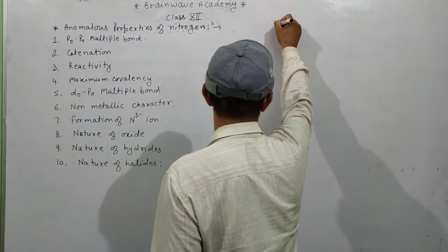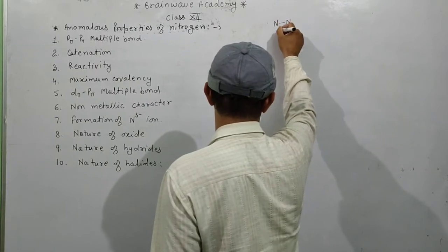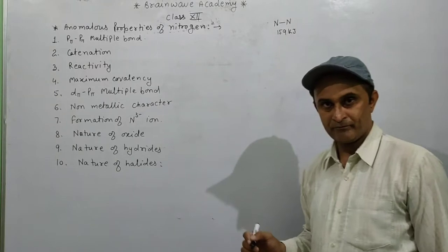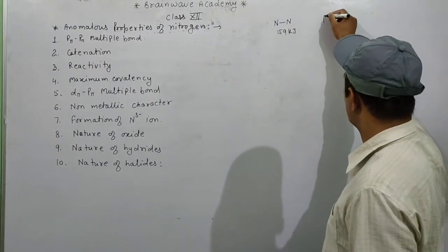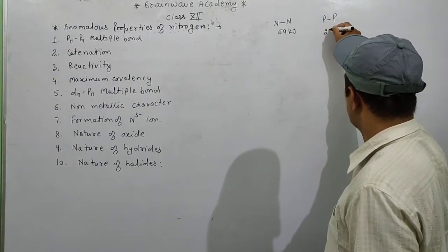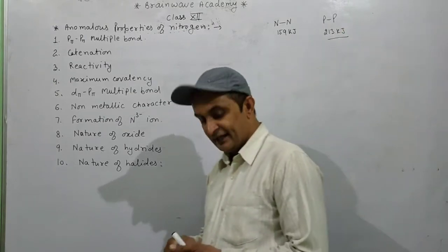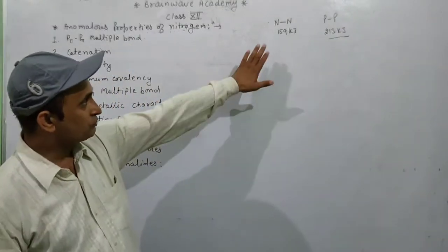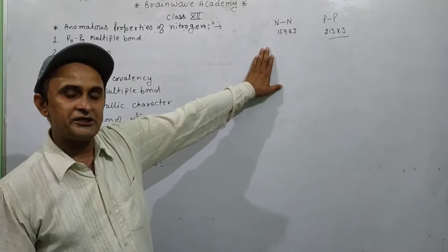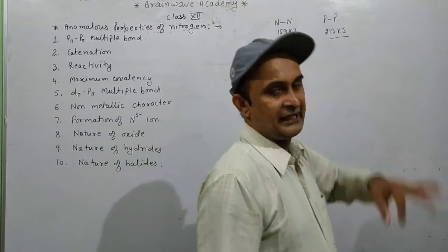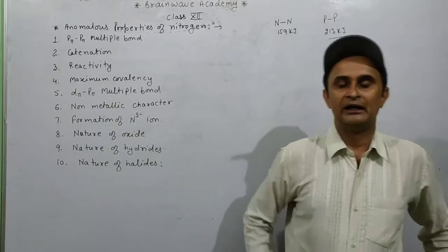Nitrogen's single bond strength is 159 kilojoules per mole. In case of phosphorus, it is 213 kilojoules per mole. After that, it will decrease. Due to small size and repulsion between the lone pairs, nitrogen have least ability to form catenation.